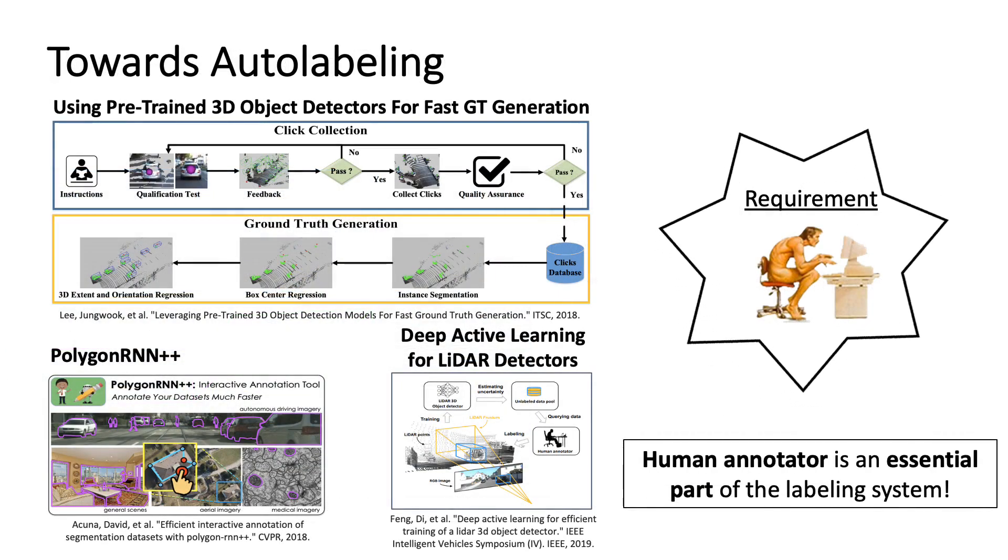Existing approaches for scale annotation pipelines include the usage of better tooling, active learning or a combination thereof. They often rely on heuristics and require human effort to correct the outcomes of semi-automatic labeling. In this work, we aim to investigate how well a fully automatic pipeline can perform in this context.